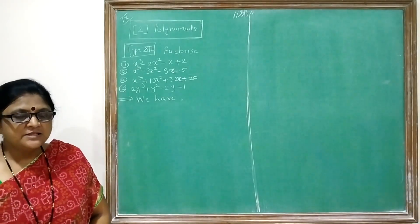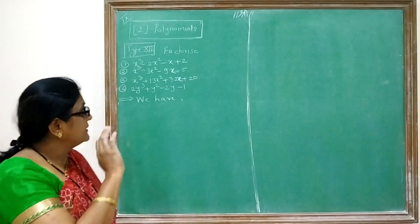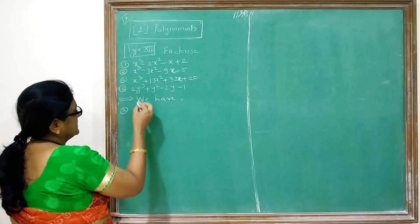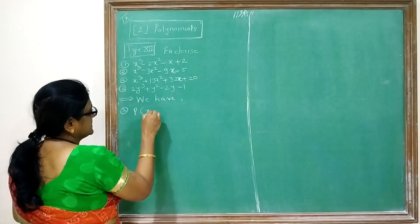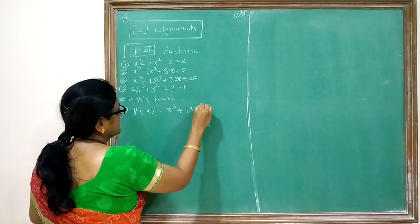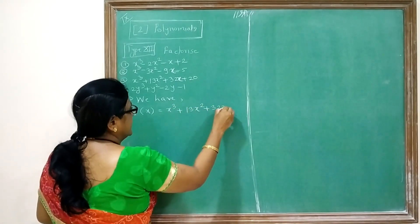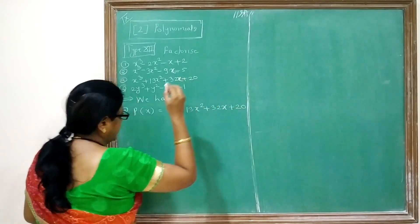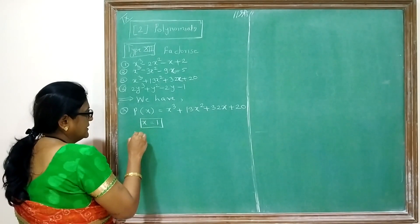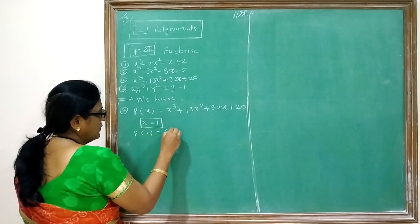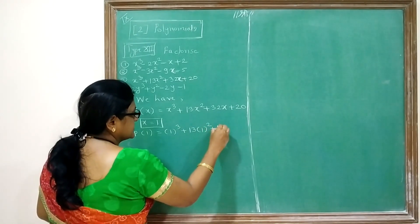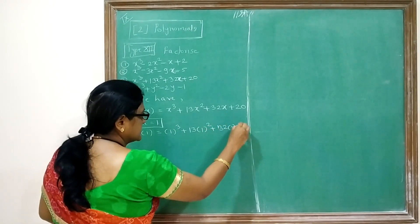Hello students. In this lecture we will continue the factorize method. The third example is P(x) = x³ + 13x² + 32x + 20. First we will put x = 1. Then P(1) = 1³ + 13×1² + 32×1 + 20.